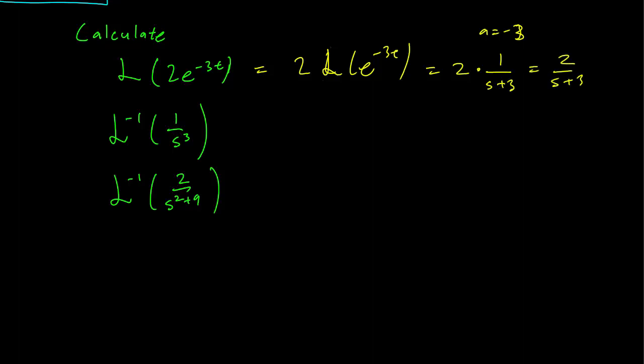So the Laplace Transform of 2e^(-3t) is just 2 over s plus 3. It works similarly going the other way too.